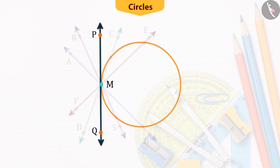But the line PQ intersects the circle at only one point M. It is the tangent of the circle at point M.